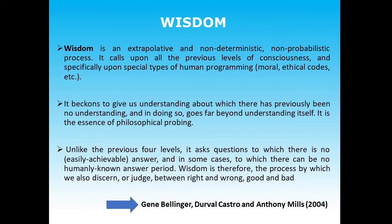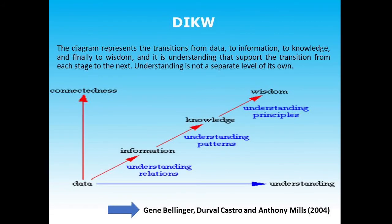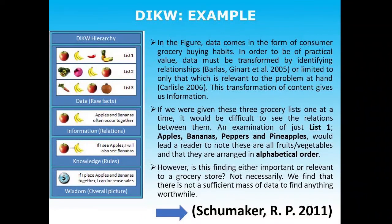This diagram represents the transition from data to information to knowledge and finally to wisdom, and it is understanding that supports the transition from each stage to the next. Understanding is not a separate level of its own — data to information is about understanding relations, information to knowledge is about understanding patterns, and knowledge to wisdom is about understanding values and principles. Understanding supports the entire data transition process throughout.